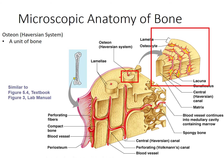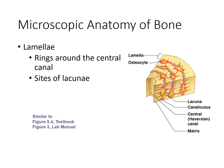And then you have these little spaces which are called lacunae. Inside the lacunae we have our osteocytes. Here's another image — here we have our lamellae, and here are our lacunae, which are the cavities. Inside the lacunae are our bone cells, or osteocytes.